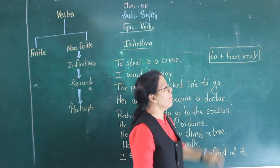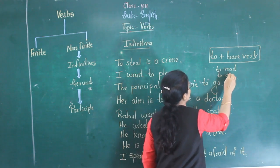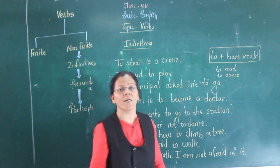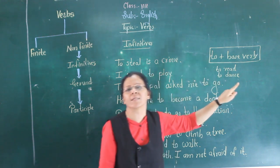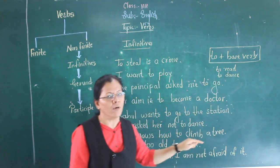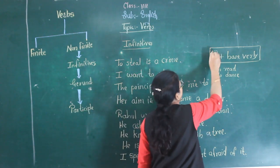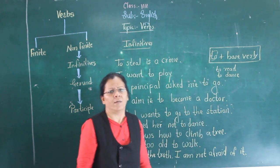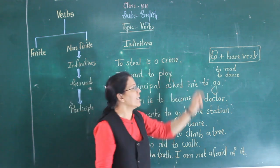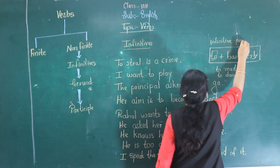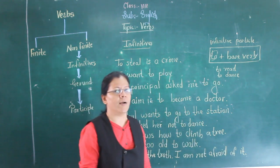For example: to read, to dance, to speak, to run. When we add the word 'to' before the base verb or before the root form of the verb, it becomes an infinitive. Now, how does 'to' act here? Does it act as a preposition? No, it doesn't act as a preposition. It is called an infinitive particle.